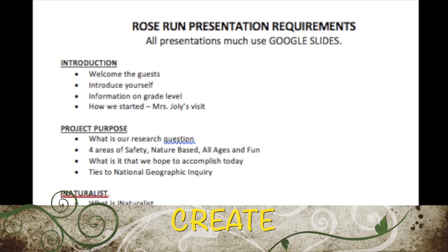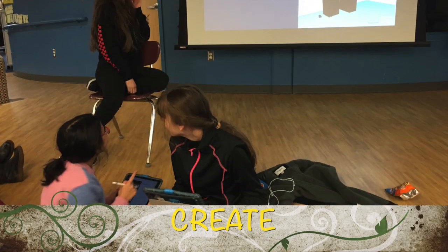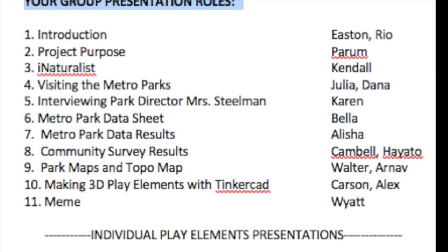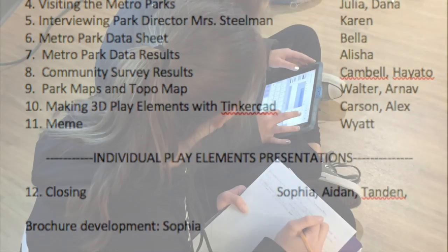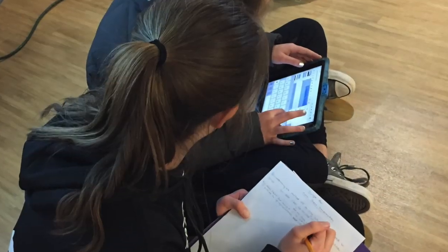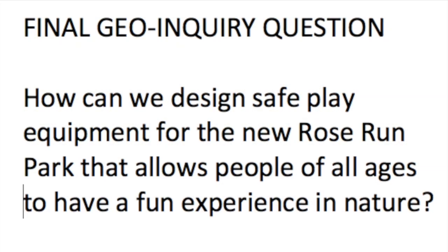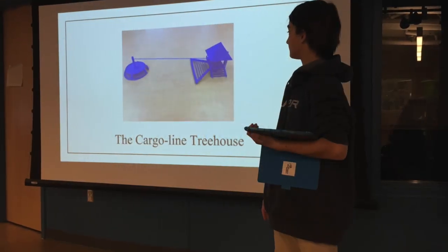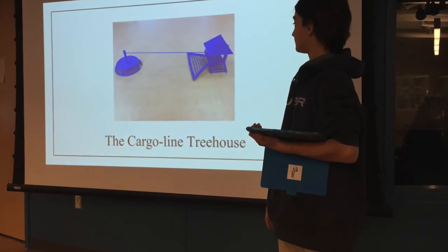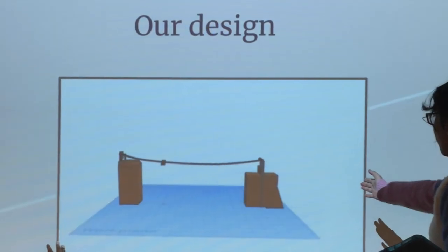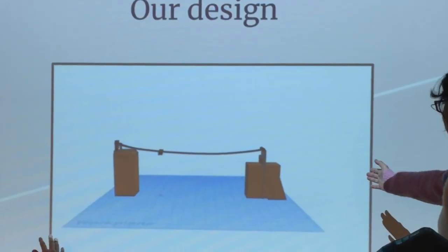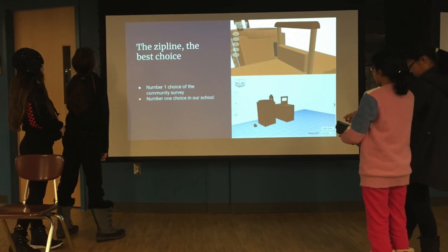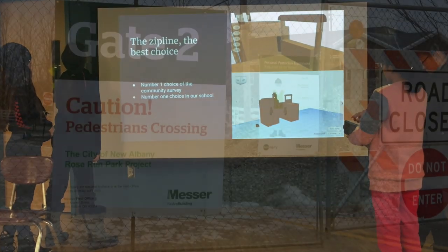It was time for us to create our story so we could share it with the city. We decided to do a formal presentation using Google Slides. We divided into small groups. Then we took another look at our geo-inquiry question and all the data we collected. We wanted the city to take action and adopt as many of our play equipment designs as they could. We knew that our presentation would have to be persuasive. We created our slides and started to practice speaking our parts on stage.